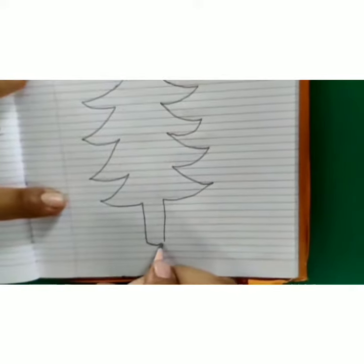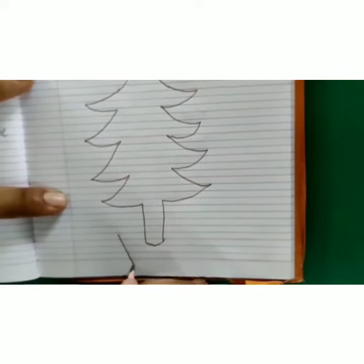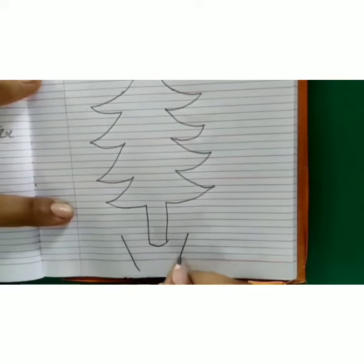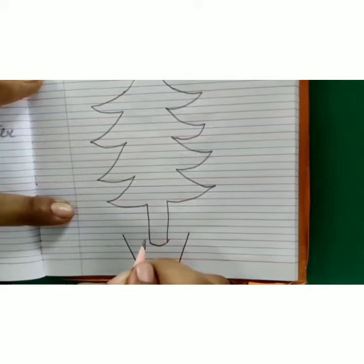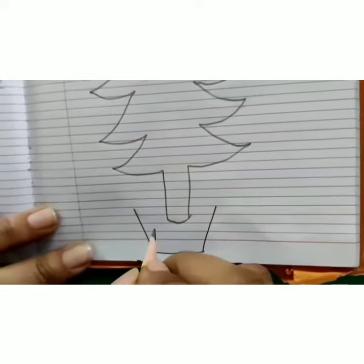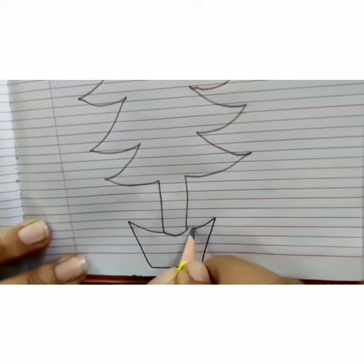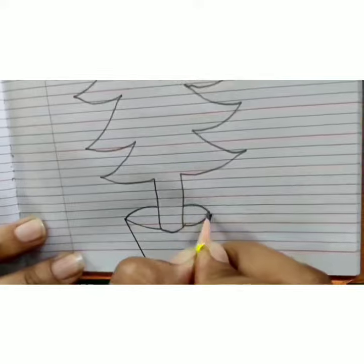Then draw half circle. From here draw a pot, for that draw slanting line, slanting line, slanting line. And draw here half circle, half circle. Now from here also draw half circle, half circle.